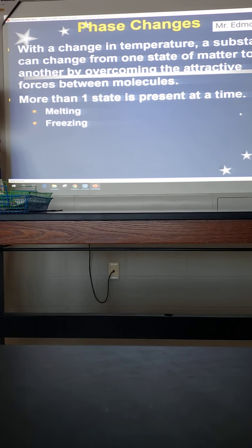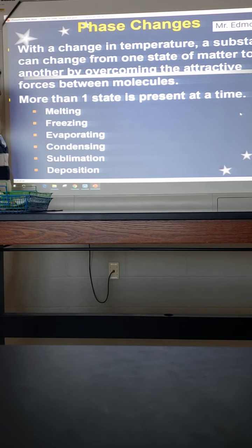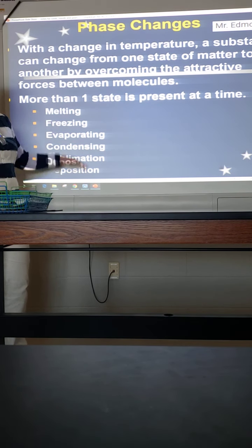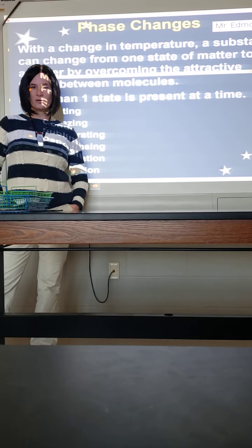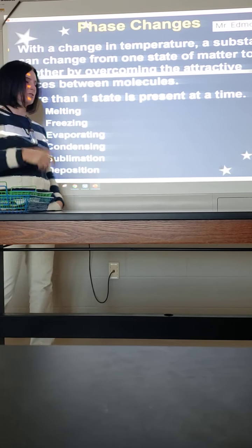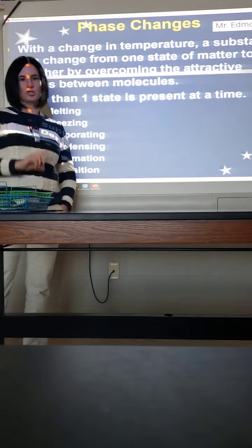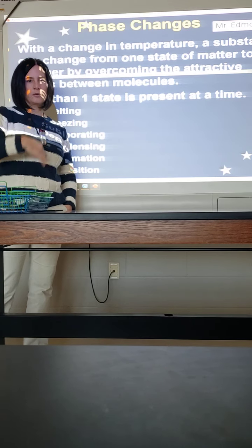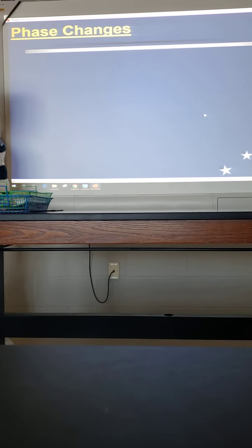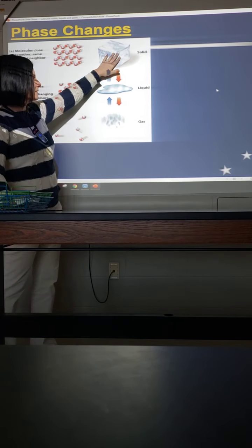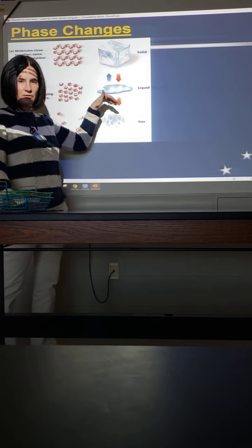Melting, freezing, evaporating, condensing, sublimation, and deposition — these are all typical ways of describing going from one state of matter to another. A lot of times it's just the reverse process: melting you're warming things up, freezing you're getting them colder, same with evaporating and condensing, and same with sublimation and deposition. Here we have solid, liquid, and gas — we know the different characteristics of those things.